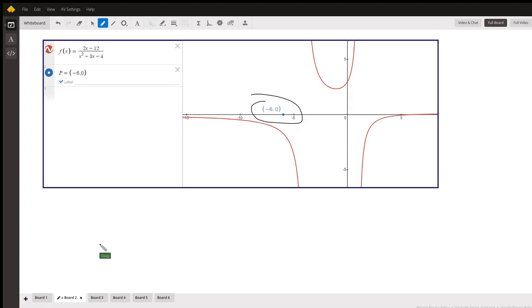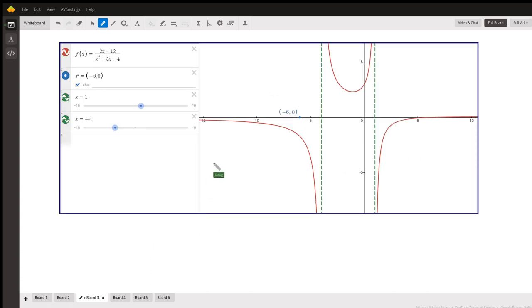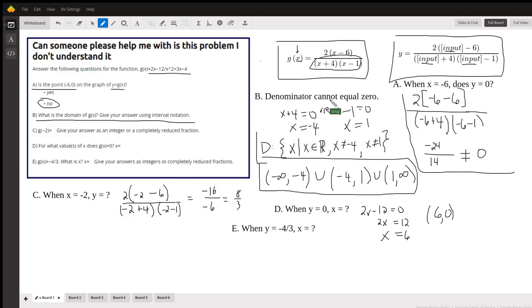And I've added vertical asymptotes here at x equals negative 4 and x equals 1. And you can see that the red graph does not cross those vertical asymptotes. x cannot equal negative 4, x cannot equal 1.